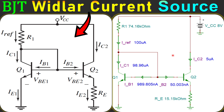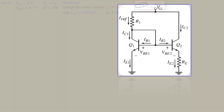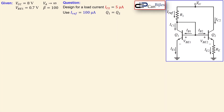Hi everyone and welcome to a new video about current sources using BJTs. This is example number four. We will discuss the Widlar current source, which is used specifically to create low currents around the microamp range, and we will see that step by step in calculations and also verify these in SPICE simulations.